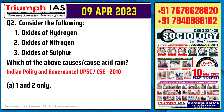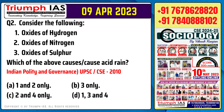Consider the following. Number 1: Oxides of Hydrogen. Number 2: Oxides of Nitrogen. Number 3: Oxides of Sulphur. Which of the above causes acid rain?